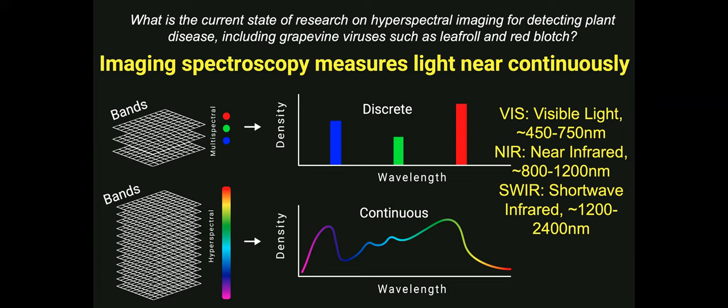When we consider vegetative imaging spectroscopy, this is the sort of technology we are referring to when we colloquially say hyperspectral imaging. Imaging spectroscopy is a powerful technology because it's able to measure light near continuously. This is what makes a sensor a hyperspectral sensor in contrast to a multispectral sensor, which measures light in discrete intervals. The range of light I'll be talking about today spans the visible to the shortwave infrared. VIS is short for the visible range of light from about 450 to 750 nanometers. NEAR is short for the near infrared range of light, which ranges from 800 to 1200 nanometers.